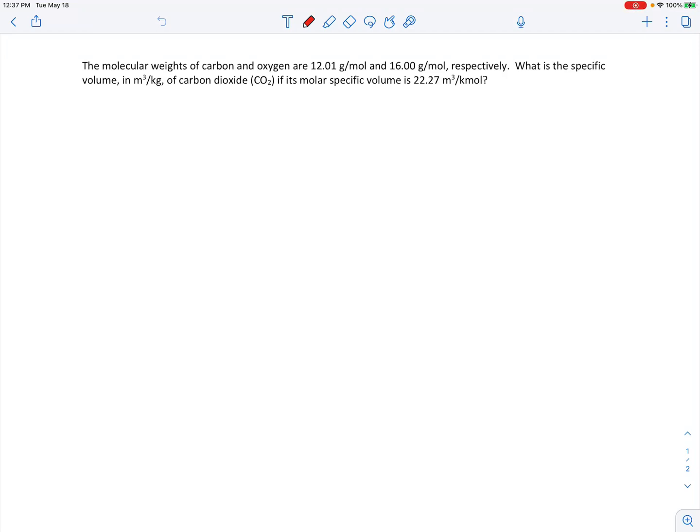Here we're told that we have the molecular weights of carbon and oxygen, so 12 grams per mole and 16 grams per mole respectively. This comes from the periodic table, the molecular mass of carbon and oxygen respectively. We're asked to find the specific volume in cubic meters per kilogram of carbon dioxide if its molar specific volume is 22.27 cubic meters per kilomole. So the first thing we're going to do on this problem is figure out